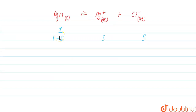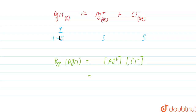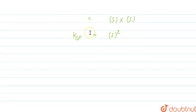The Ksp expression of AgCl is: Ksp = [Ag⁺]¹ × [Cl⁻]¹, where the exponents are the stoichiometric coefficients. AgCl is a solid, and we take the activity of a solid as 1. Since [Ag⁺] = s and [Cl⁻] = s, we get the relation Ksp = s². Here, s is the solubility of AgCl, which is 1.06 × 10⁻⁵ mole per liter.